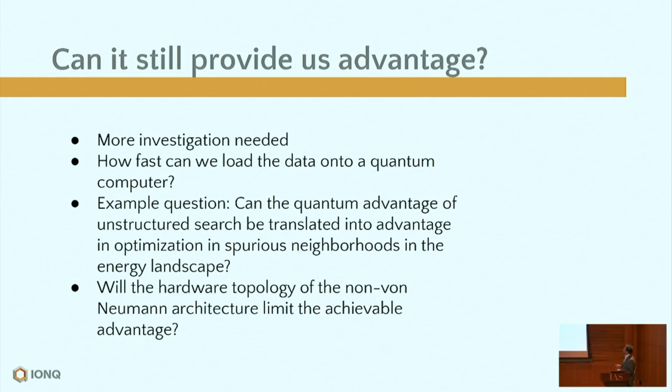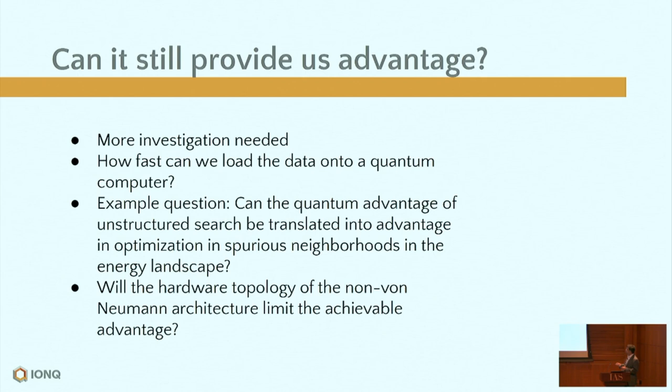There are both challenges and progress. Challenges include how fast you can load input into the quantum computer — the QRAM problem — and algorithm-level challenges such as mapping abstract expected speedups for unstructured search into practical deep learning problems. The non-von Neumann architecture with fixed graph topology can also limit the algorithmic advantage we expect. These are open problems we are still working on.